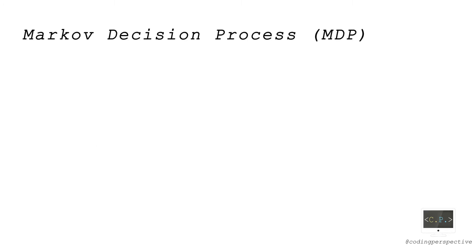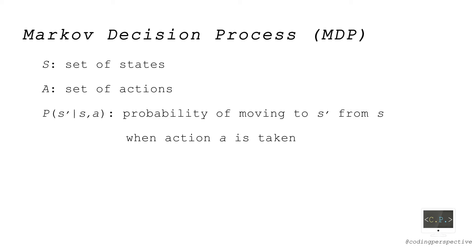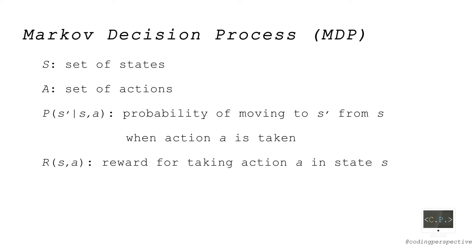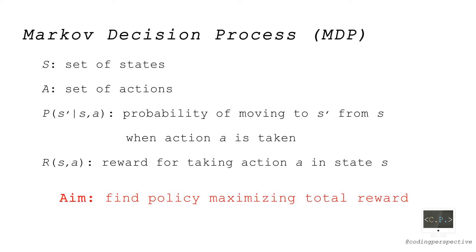As a reminder, an MDP can be defined by a set of states S, a set of actions A, a transition function P, and a reward function R. P(S' | S, A) is the probability of moving from state S to another state S' when action A is taken. R(S, A) is the reward for taking action A in state S. Our objective is to find the optimal policy that maximizes total reward, where a policy assigns an action to each state.